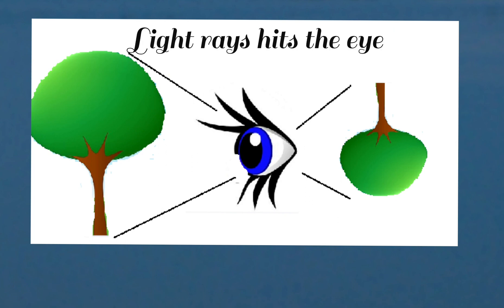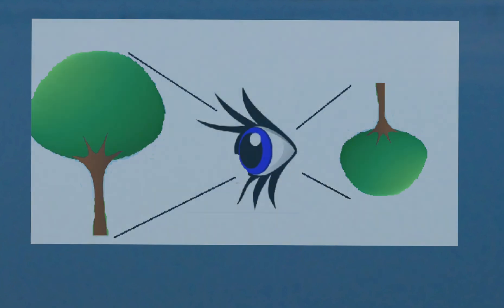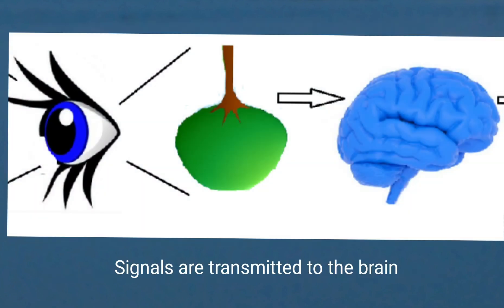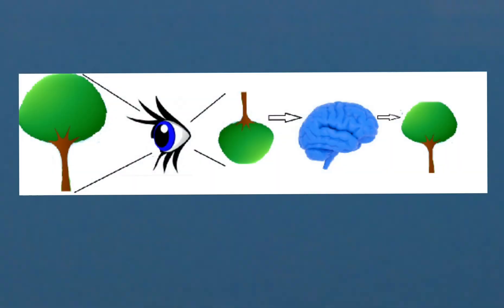In human eyes, when light hits the light-sensitive membrane called the retina, signals are produced. These signals are transmitted to the brain. For our brain, all these images are nothing but signals. The brain processes these signals and gives us a non-inverted version of the image — in simple words, the brain flips the image again. So there are two inversions: one due to the eye, and another due to the brain. This is why we see a non-inverted version of the image.